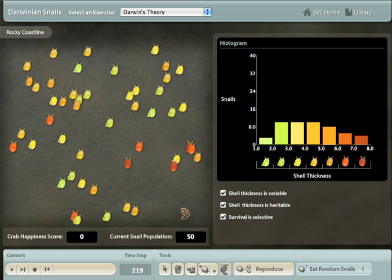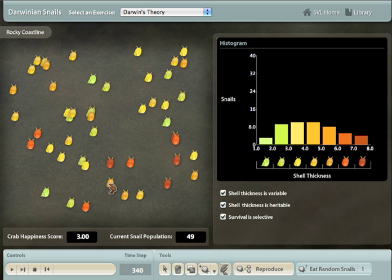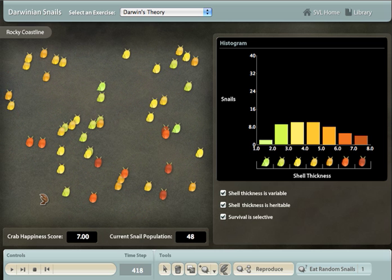Students start out taking on the role of a green crab. Using the mouse, they click on snails to crush them with the crab's large claw. If I click on this snail, I crush it and eat it.